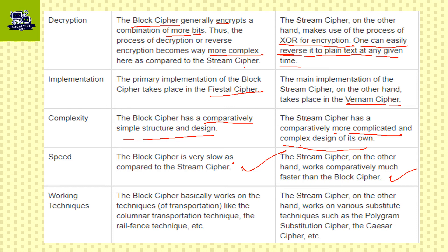Working technology: block cipher basically works on techniques like the columnar transformation technique and the rail fence technique. Stream cipher, on the other hand, works on various substitution techniques such as polygram substitution cipher and Caesar cipher.